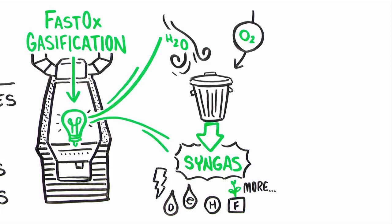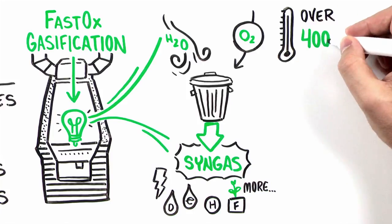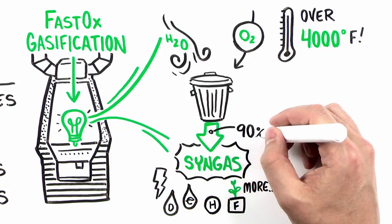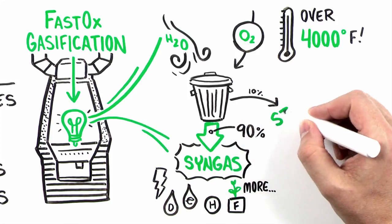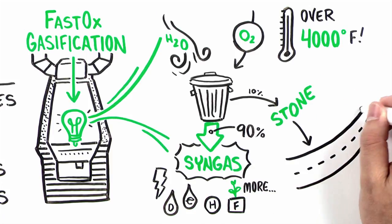Rapidly injecting highly concentrated oxygen and steam raises the temperature above 4,000 degrees Fahrenheit. 90% of waste volume is converted to syngas. The remaining 10% is liquefied and recovered as metals and inert stone, and sold for reuse in construction aggregate or road base.